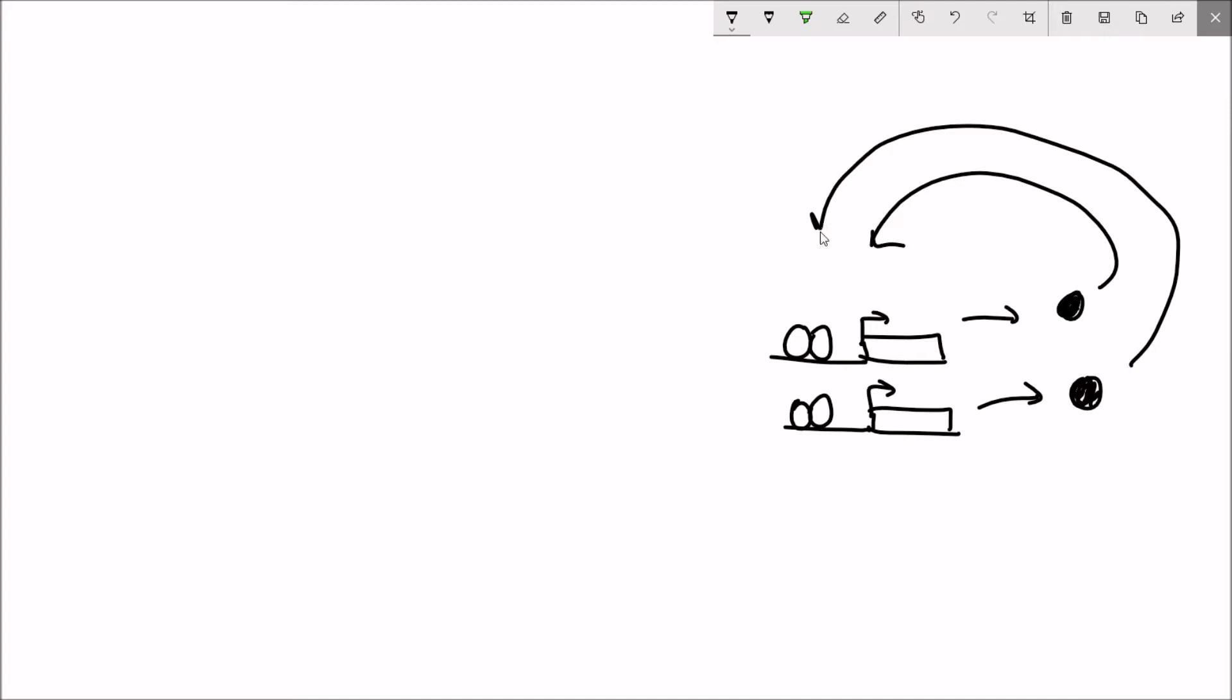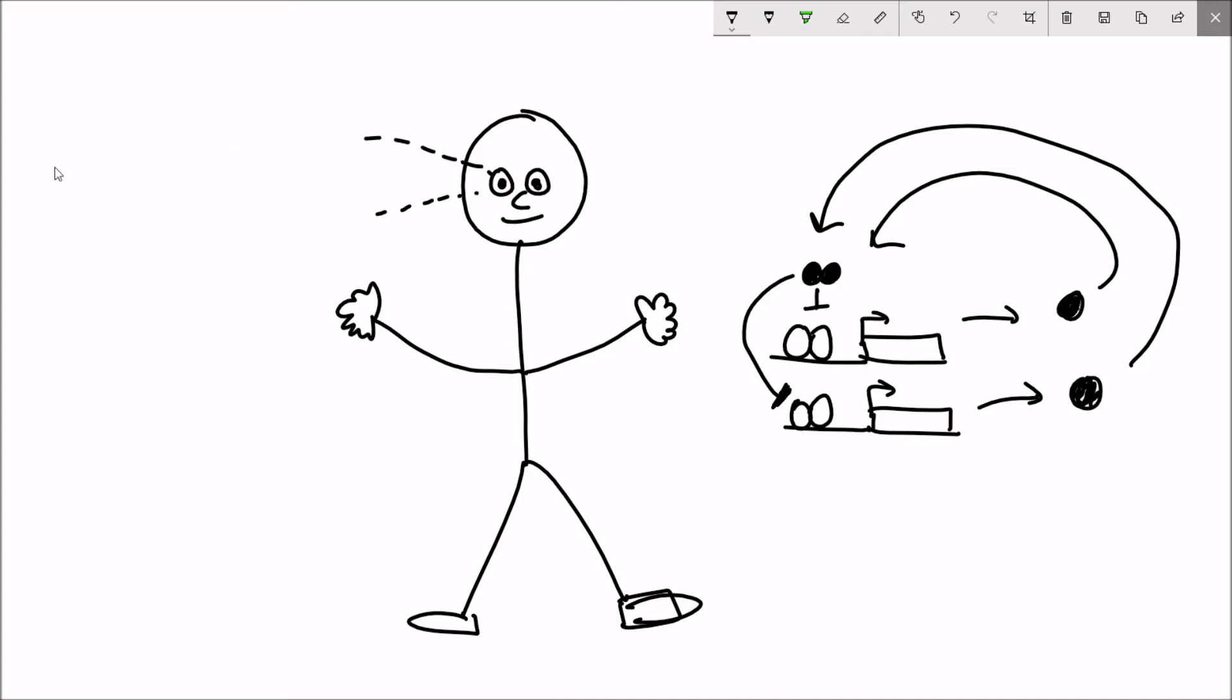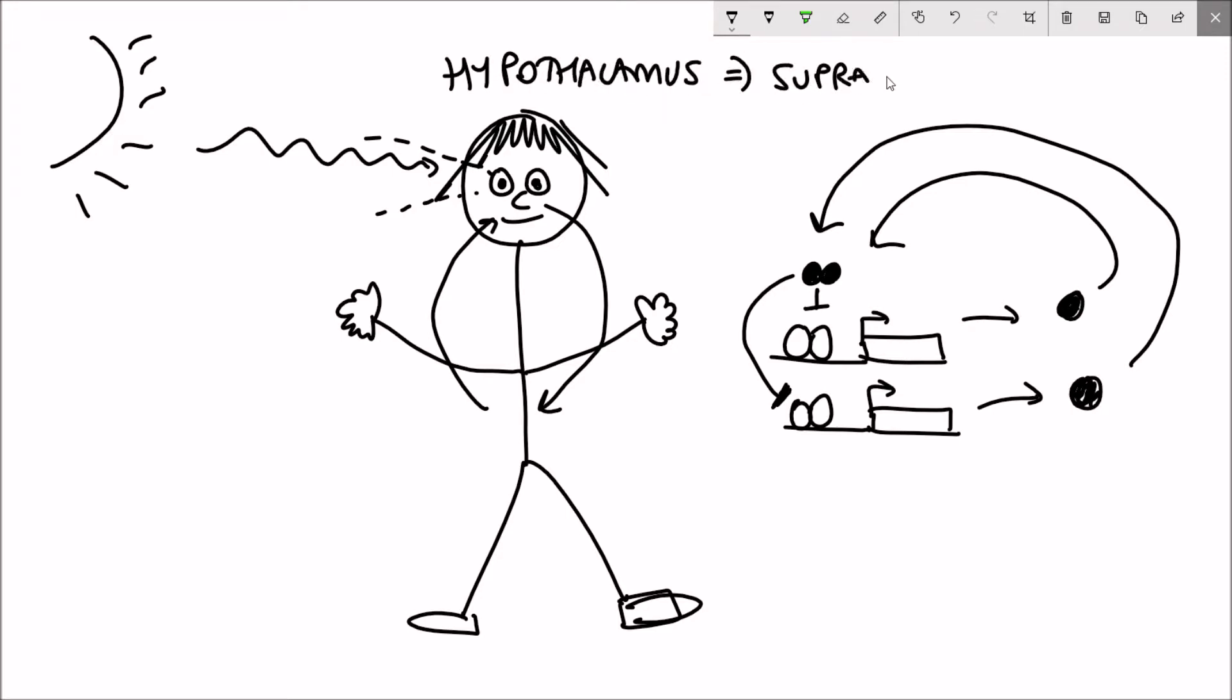But what about shift work that causes circadian dissonance? While circadian rhythms are intrinsic to a cell, in multicellular organisms like ourselves, each cell needs to coordinate with each other. This is achieved by the so-called conductor of the circadian rhythms, found in the hypothalamus of the brain, the suprachiasmatic nucleus or the SCN.